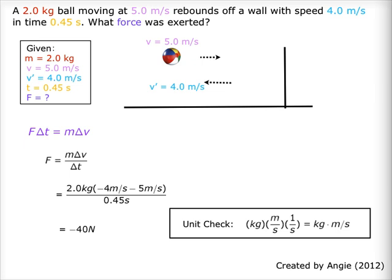A 2.0 kg ball moving at 5.0 m per second rebounds off a wall with speed 4.0 m per second in a time of 0.45 seconds. What force was exerted? The mass of the ball is 2.0 kg, initial velocity is 5.0 m per second, final velocity is 4.0 m per second, and the time is 0.45 seconds. We are looking for the force exerted.